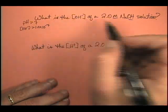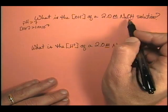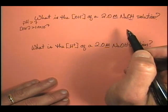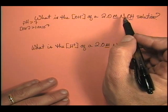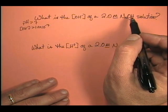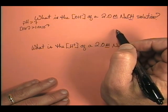Now, if we look here, we also know that if we look at sodium hydroxide, for every mole of sodium hydroxide, we have 1 mole of hydroxide ion. So if we have a 2 molar sodium hydroxide solution, we also have a 2 molar hydroxide ion solution.